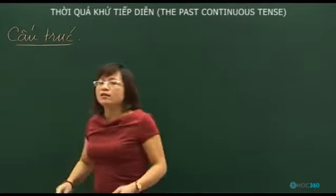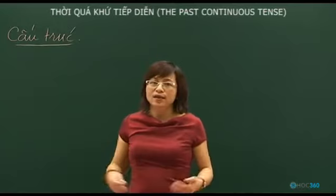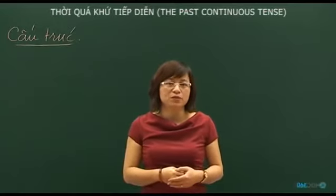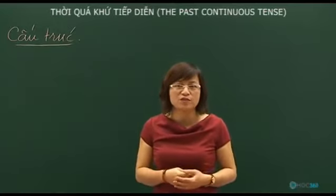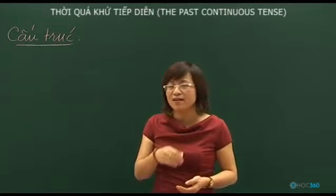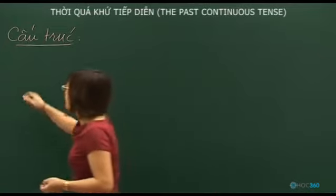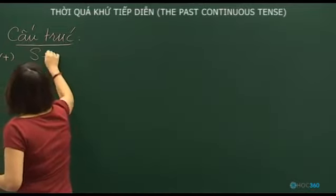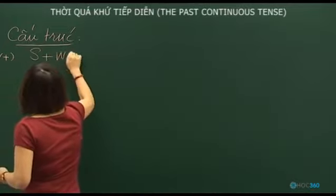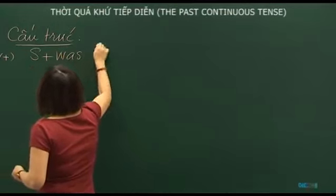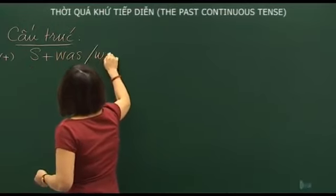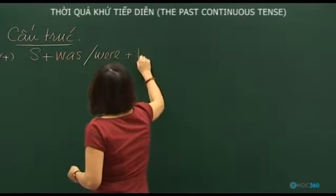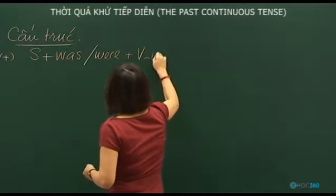The past continuous is simpler than the simple past. It typically uses the verb 'to be' as an auxiliary verb, so it is easy to remember. For affirmative sentences, we use subject + was/were + verb-ing.